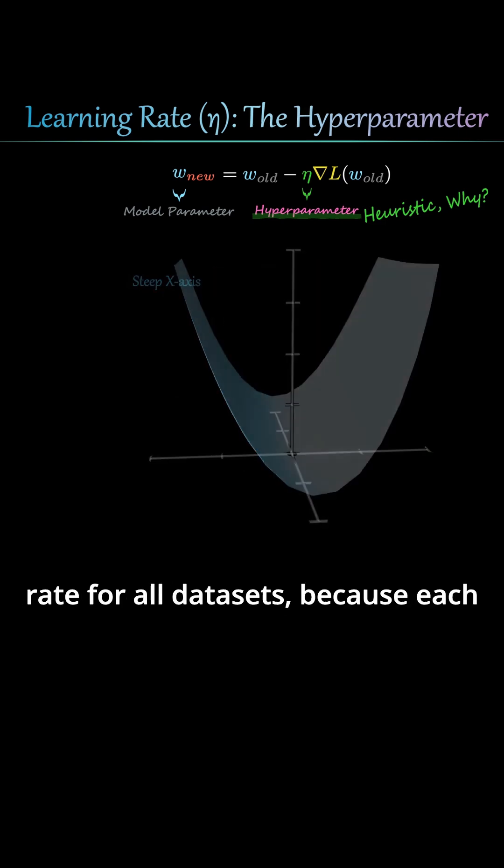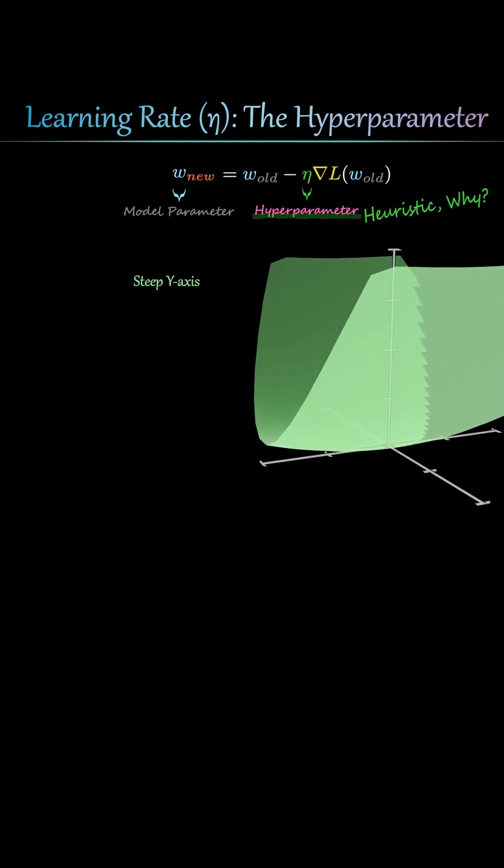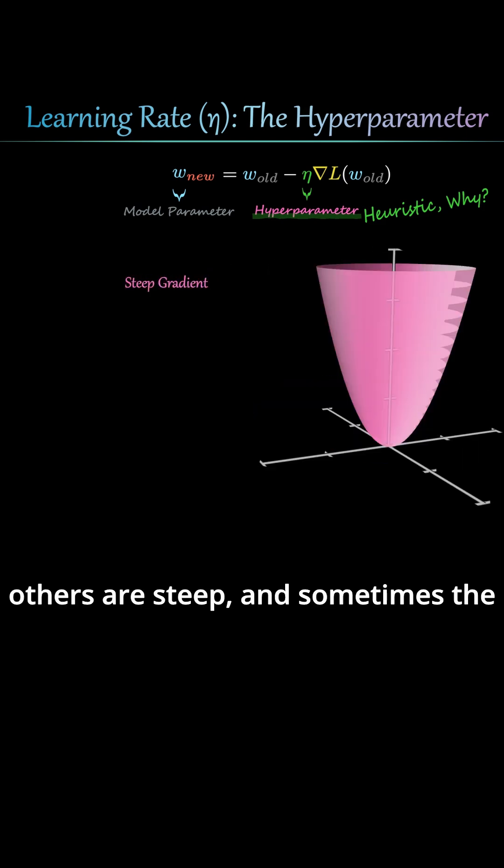There's no single optimal learning rate for all datasets because each dataset has different numerical characteristics. Some loss surfaces are shallow, others are steep, and sometimes the curvature is highly asymmetric, like this direction here.